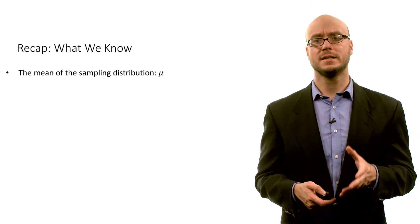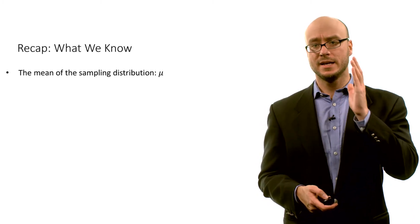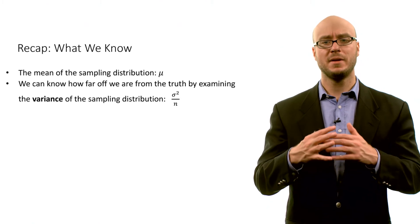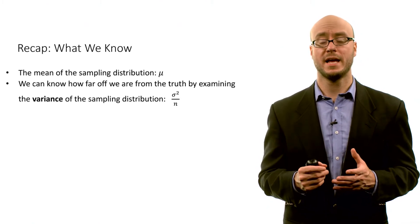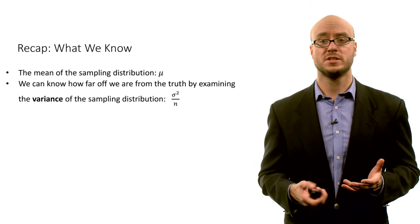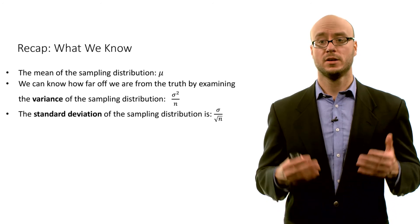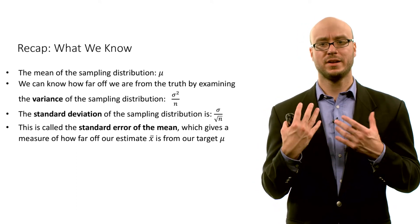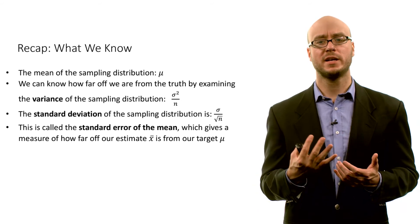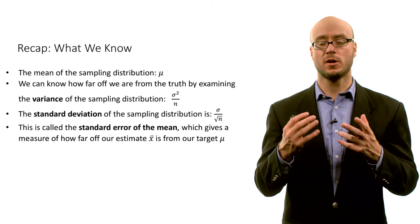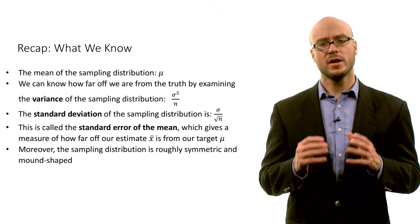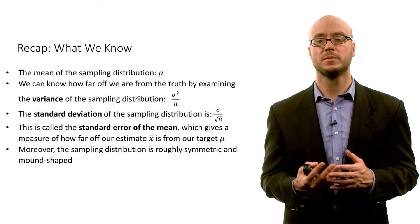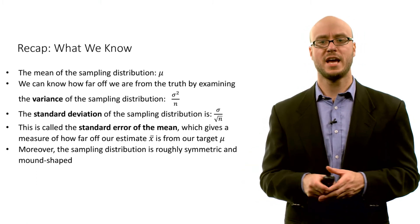The mean of the sampling distribution is centered on the population mean mu. We can know how far off we are from the population mean by examining the variance of the sampling distribution, which is σ²/n, or the standard deviation of the sampling distribution, which is σ/√n. That standard deviation of the sampling distribution we call the standard error of the mean. Additionally, the sampling distribution is roughly symmetric and mound-shaped — the left and right sides look more or less the same — centered right on that population mean mu.